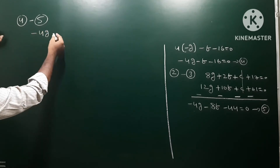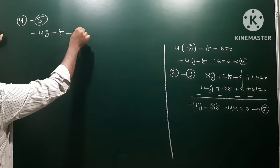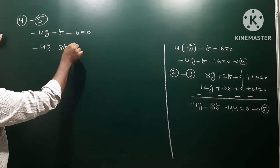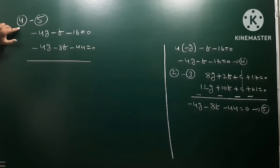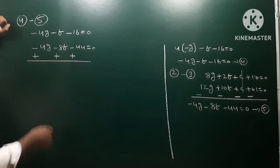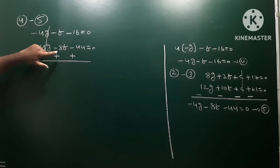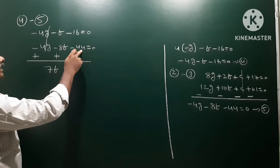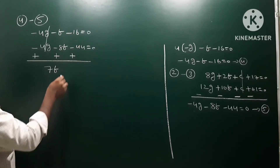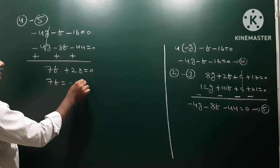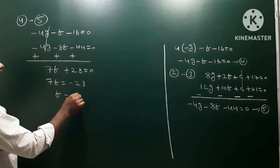We now have equation 4: minus 4g minus f minus 16 is equal to 0, and equation 5: minus 4g minus 8f minus 44 is equal to 0. Subtracting equation 4 from equation 5: minus 4g cancels, and minus 8f minus minus f gives minus 7f, and minus 44 minus minus 16 gives minus 28.